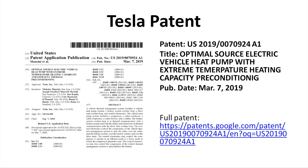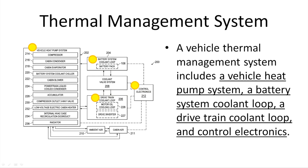Here is a diagram from the patent. It shows a thermal management system which includes a heat pump system, a battery system, a drivetrain coolant loop, and control electronics. You can find all the components within the heat pump system, like the compressor, cabin condenser, and cabin evaporator.